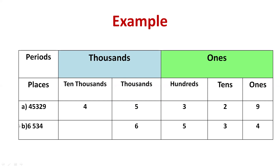Now there is another example — the number 6, 5, 3, 4. You will not start writing from six. We'll start writing from the right side, which is four. So we'll write four under the ones place, three under the tens place, five under the hundreds place, and six under the thousands place. There is nothing under ten thousands because we do not have ten thousands here — you can write zero, or leave it blank. Always start writing the number from the right side.